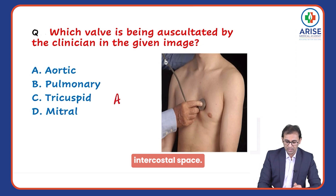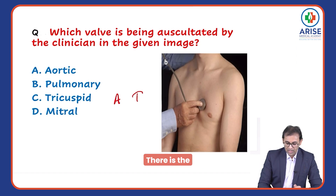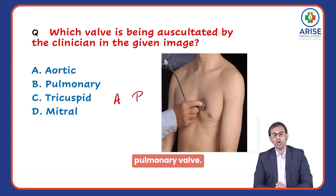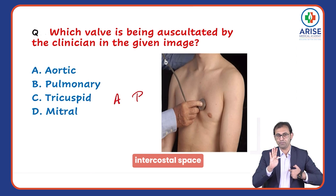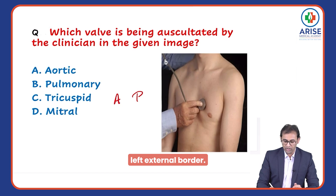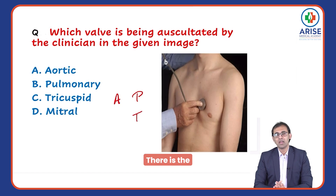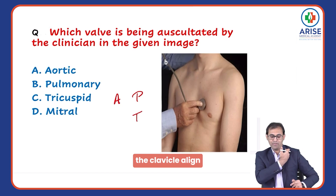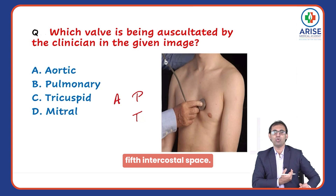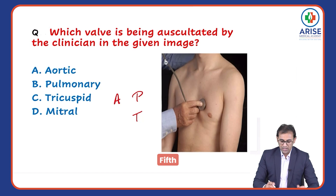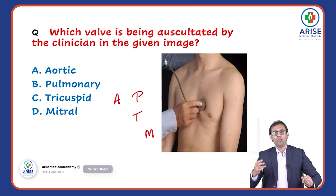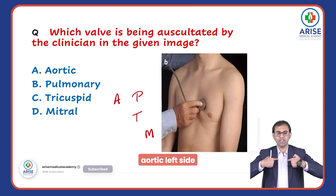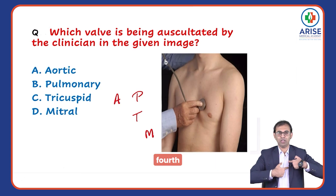At the second intercostal space on the left sternal border, there is the pulmonary valve. Going down to the fourth intercostal space at the left sternal border, there is the tricuspid valve. At the fifth intercostal space along the mid-clavicular line, there is the mitral valve.